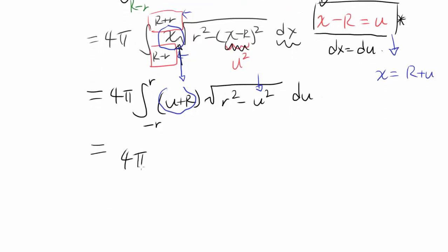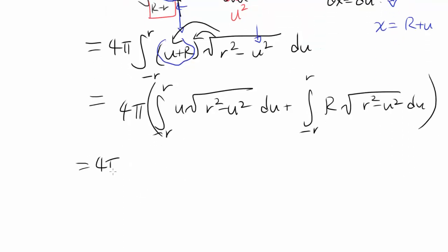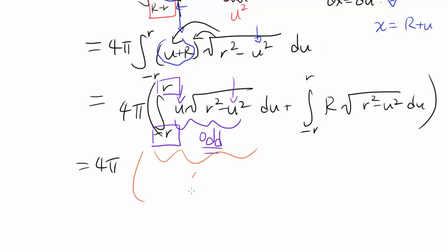Distributing, we split this into 4π times: the integral from −r to r of u√(r² − u²) du, plus the integral from −r to r of R√(r² − u²) du. The first integrand is an odd function — when you plug in −u, the sign switches, since u changes sign but u² stays the same. Integrating an odd function over a symmetric interval [−r, r] gives 0.